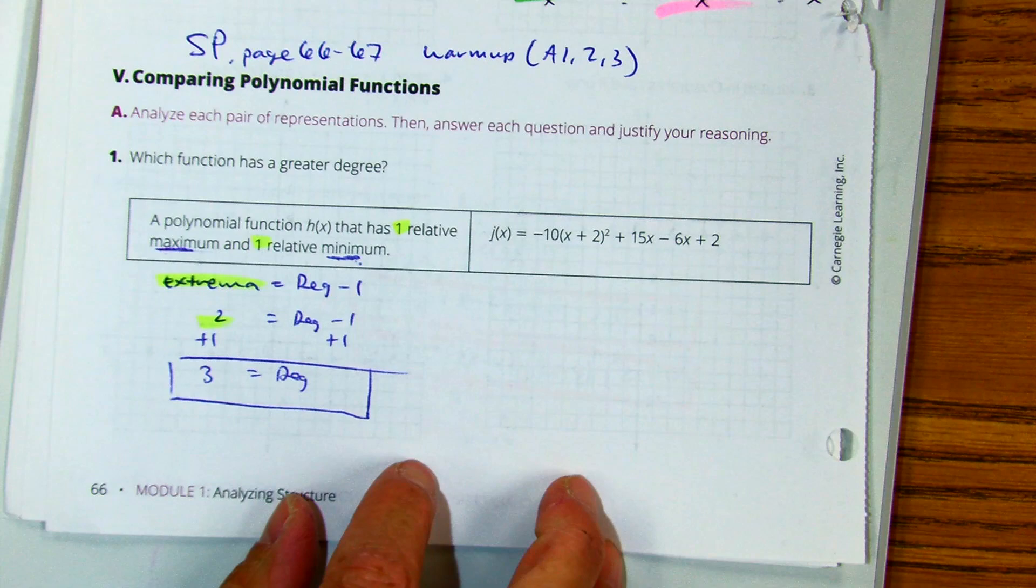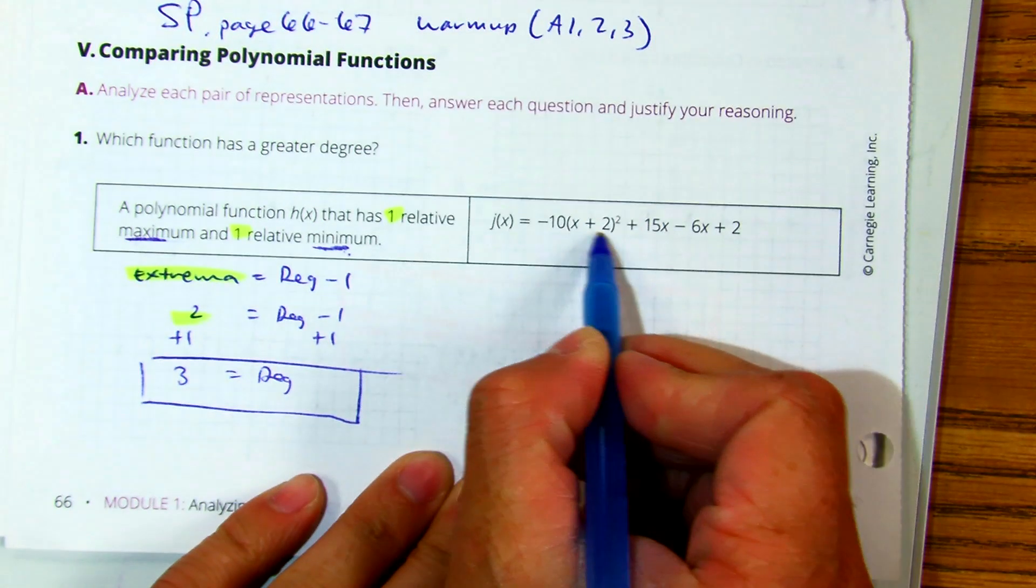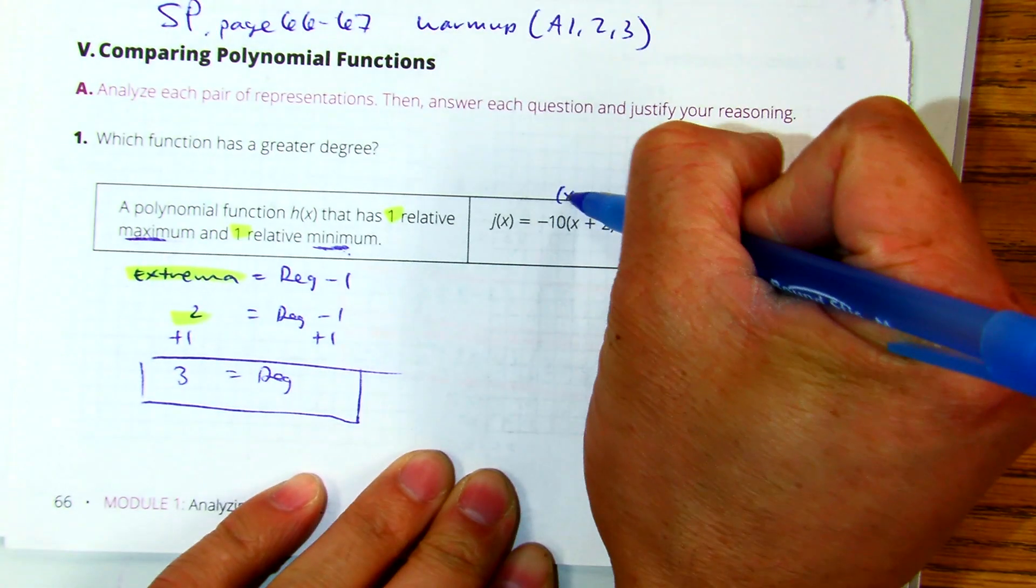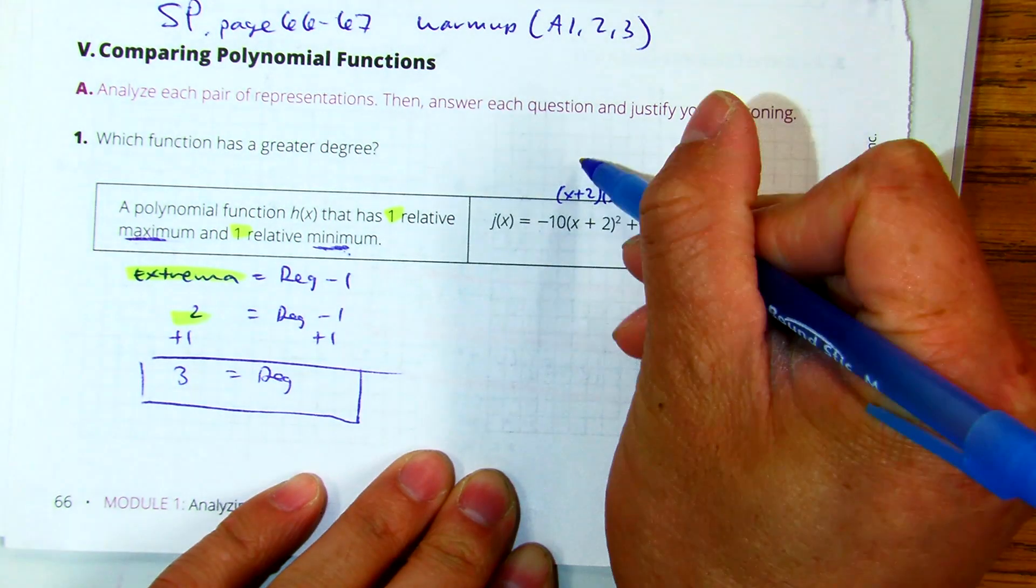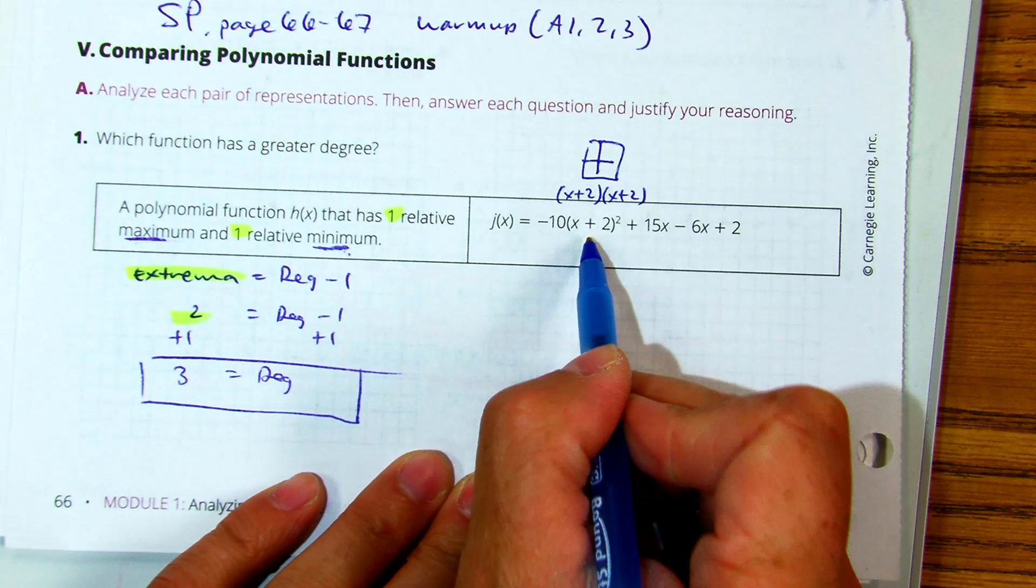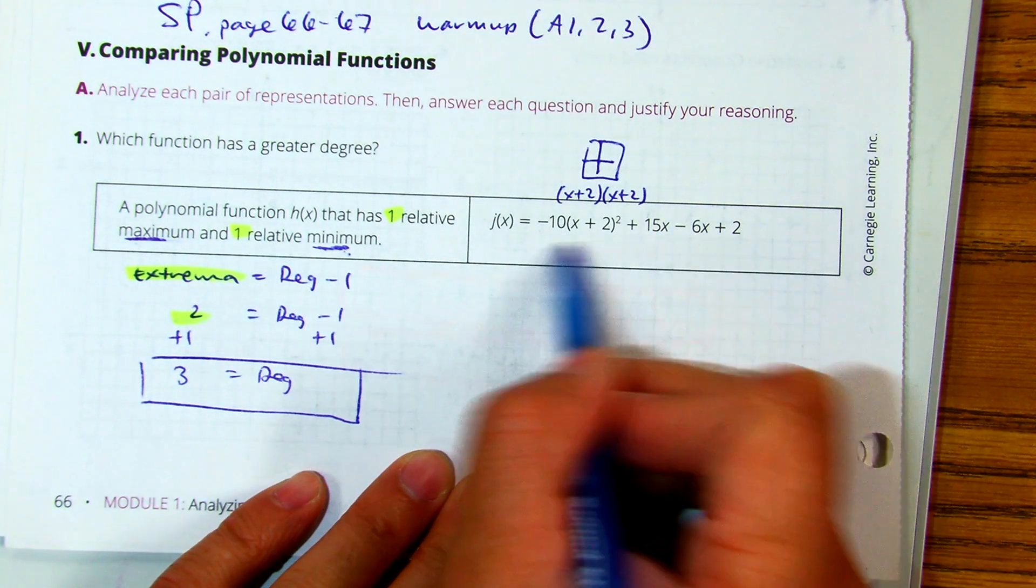On j of x, it says negative ten times x plus two squared plus 15x minus 6x plus two. Now, the long way of doing the problem is if you expand it, there's two of them, and then you would multiply those using a box, and then you would multiply by negative ten and add 15x minus 6x and add two. That's a lot of work.